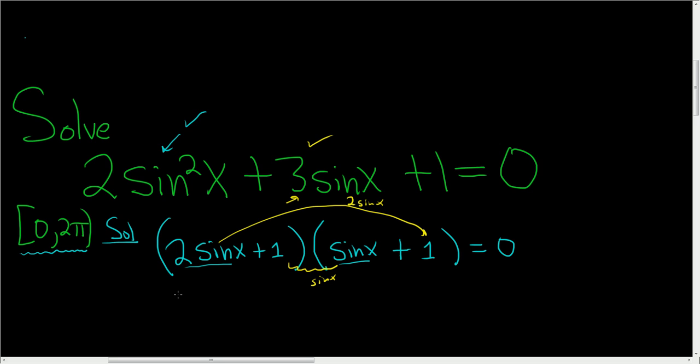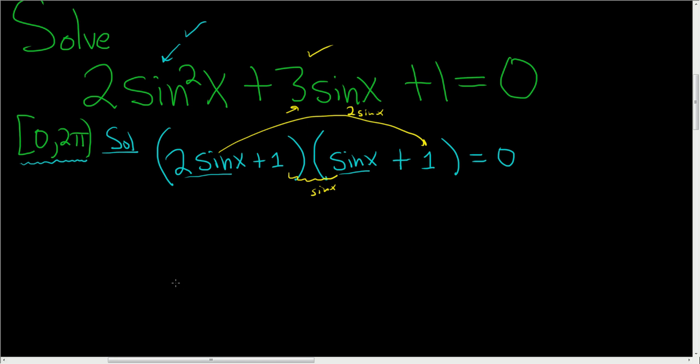Okay, so we have a product equal to 0, so we can set each factor equal to 0. 2sinx + 1 = 0, and then over here we have sinx + 1 = 0.